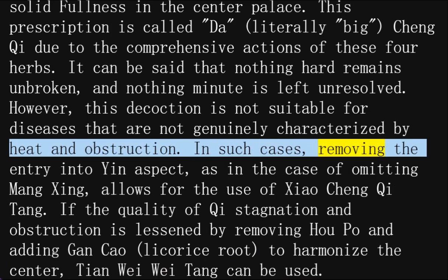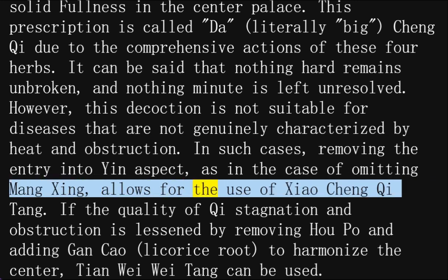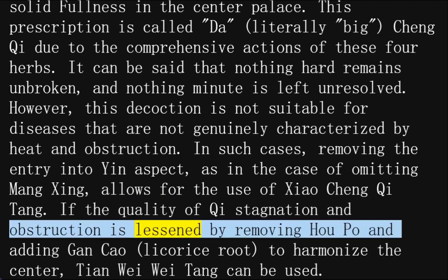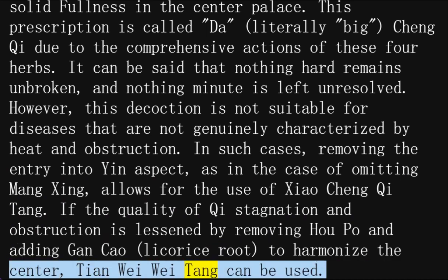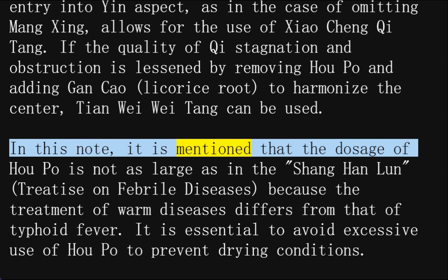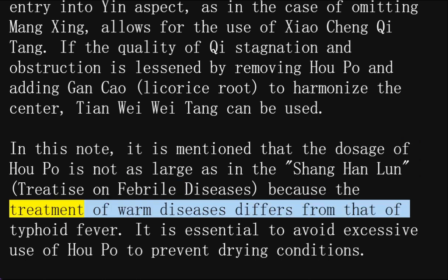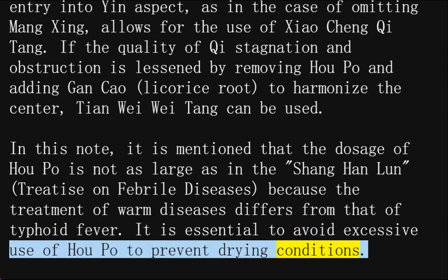In such cases, removing the entry into yin aspect by omitting mangxing allows for the use of Xiao Cheng Qi Tang. If the quality of qi stagnation and obstruction is lessened, by removing hu po and adding gan cao (licorice root) to harmonize the center, Tiao Wei Cheng Qi Tang can be used. In this note, it is mentioned that the dosage of hu po is not as large as in the Shang Han Lun (Treatise on Febrile Diseases), because the treatment of warm diseases differs from that of typhoid fever. It is essential to avoid excessive use of hu po to prevent drying conditions.